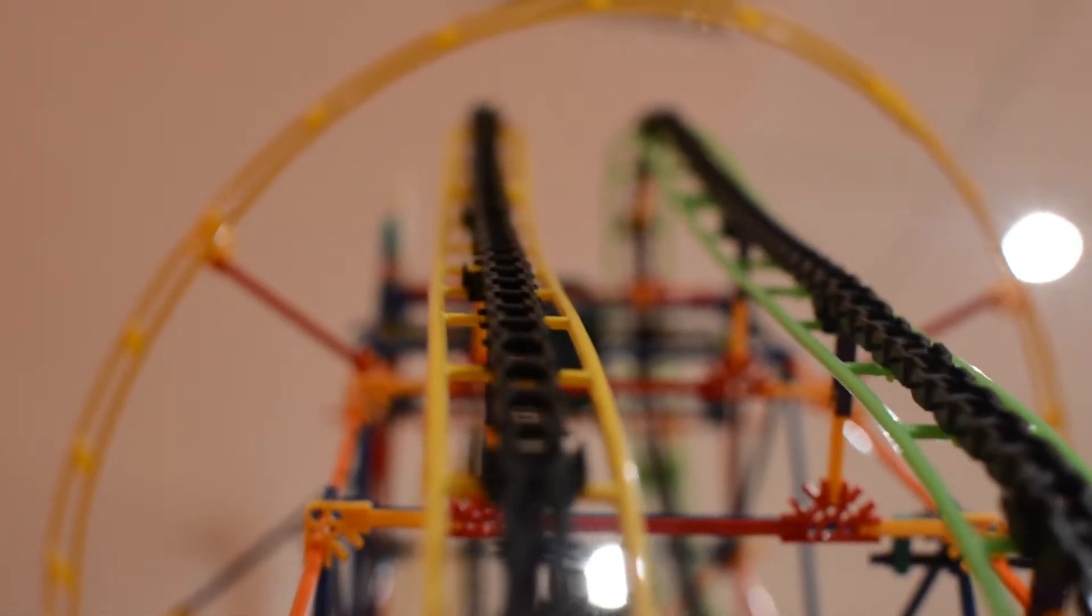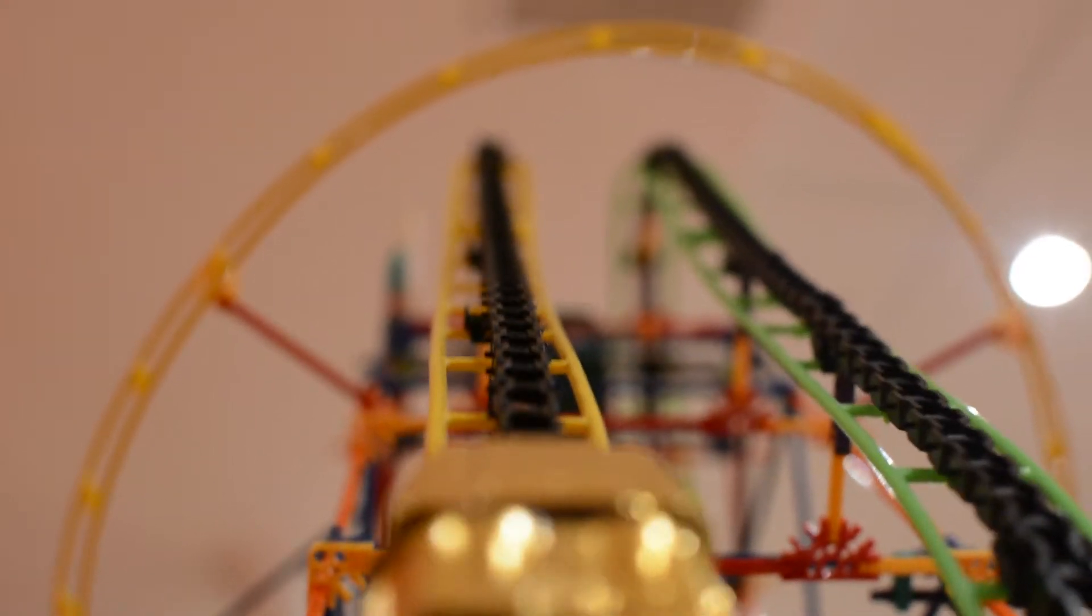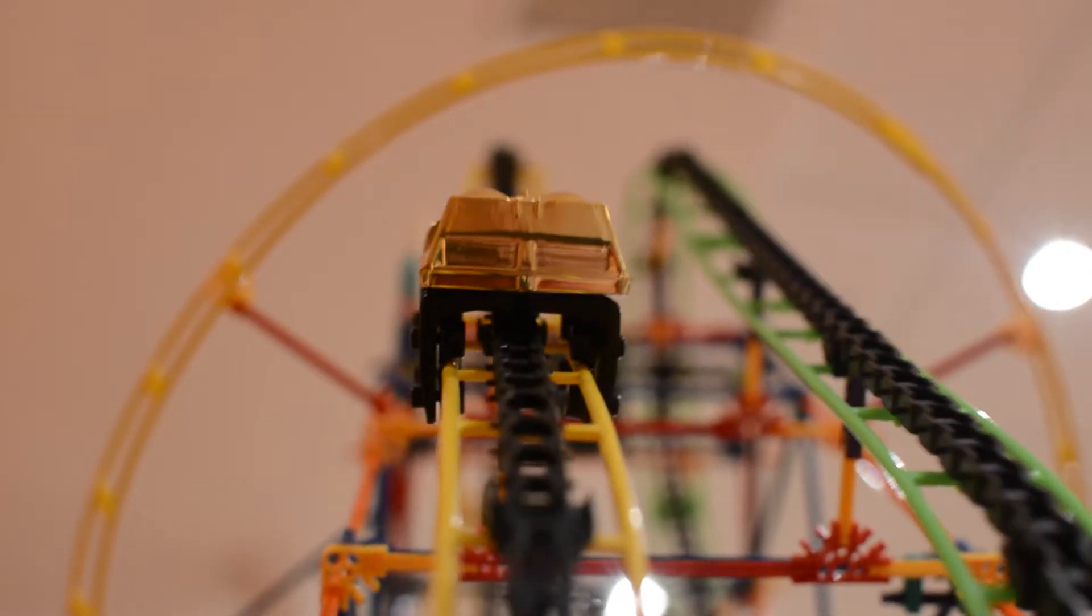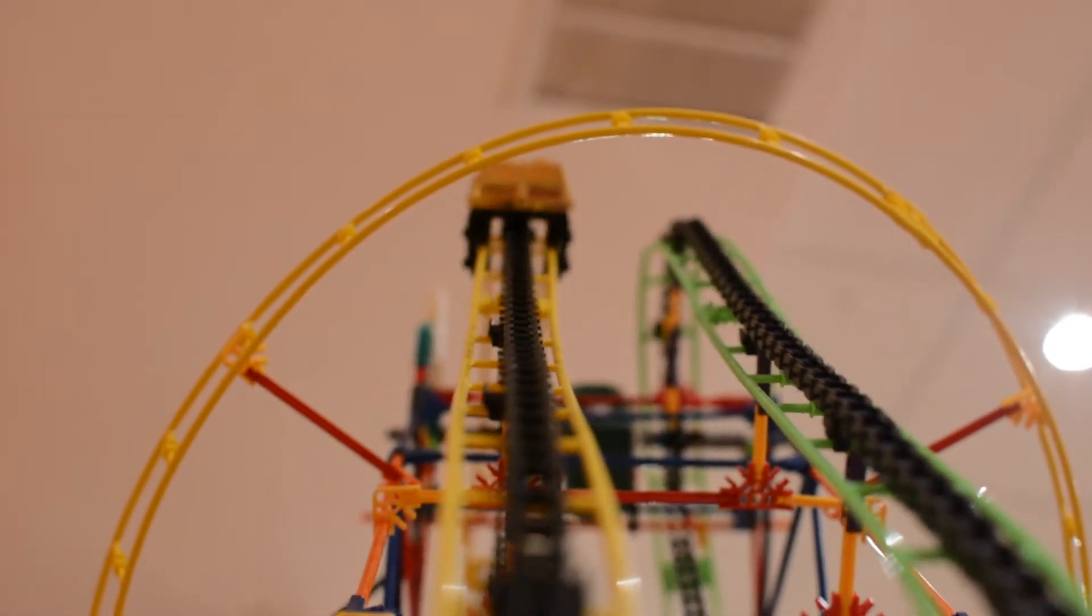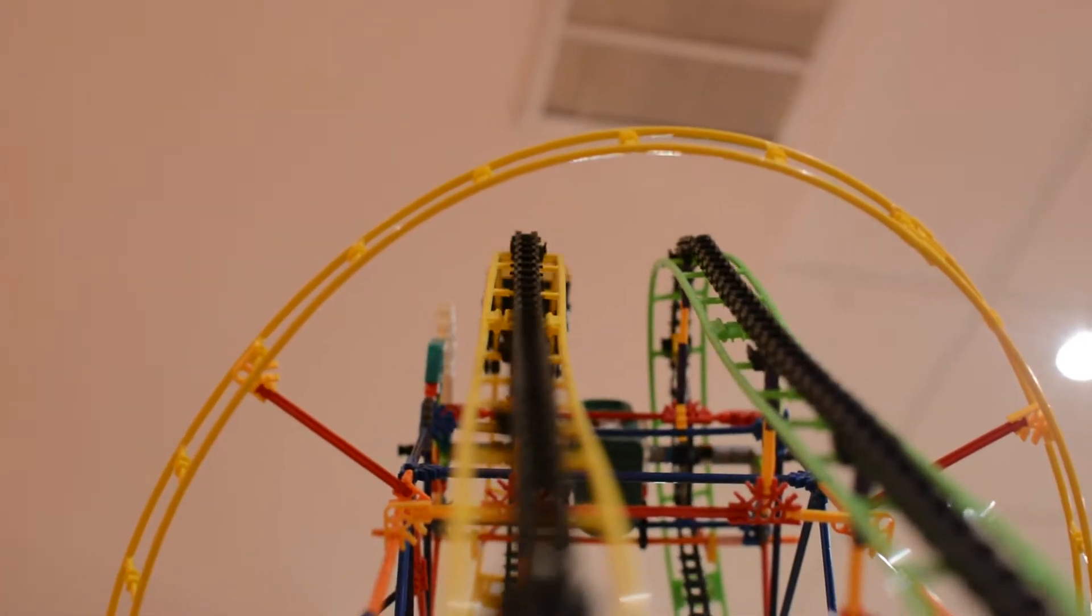Most roller coasters are pulled to the top of the ride using a chain lift. As the energy used to power the chain doesn't disappear, the cars store more energy the higher up they go. This is called potential energy and is released when the cars clear the top.